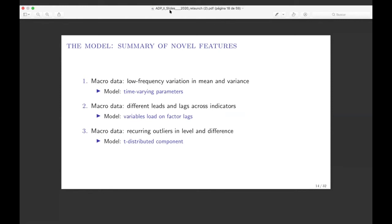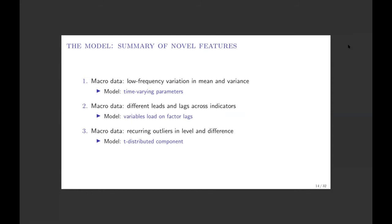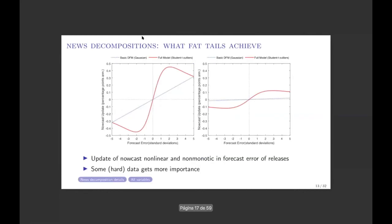There is a question: if you remove the outlier, do you get a similar result — what is the advantage of not removing it? Suppose you do what many people do: remove anything above three standard deviations and put in a NaN. The influence function you would be imposing would drop to zero after three standard deviations — you are saying the variable has zero impact beyond that threshold.